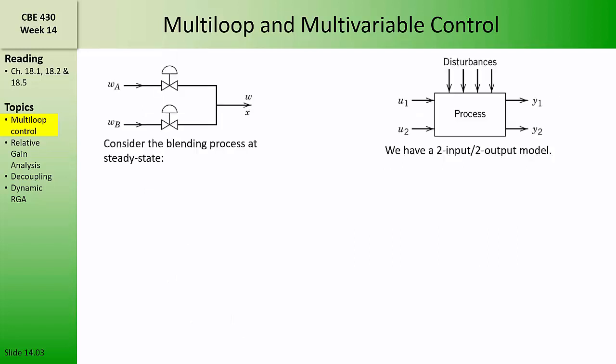Let's begin by considering just the simple process of an inline blending operation. Here we have just two inputs, the flow rates WA and WB, and we have two outputs, the total flow rate and the composition of the effluent. To decide how to pair these, we could first write a steady state model for the total mass balance and the component balance for the solute.